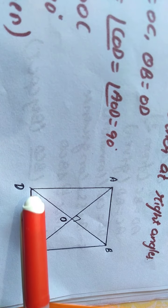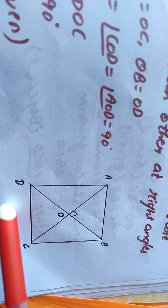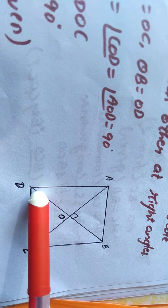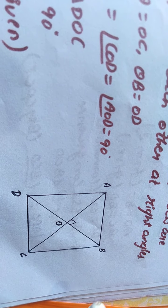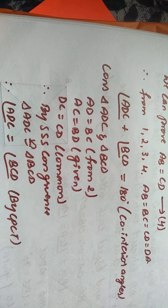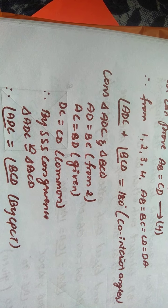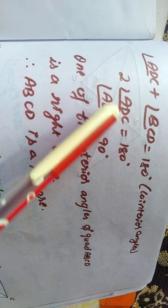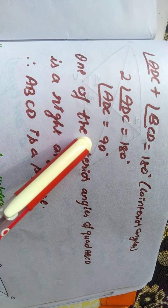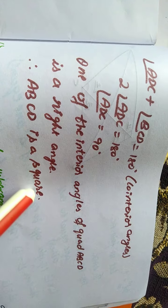By CPCT, angle ADC equals angle BCD. Now I am going to add angle ADC plus angle BCD — both are co-interior angles, so when added they give 180 degrees. Since both angles are equal, 2 times angle ADC equals 180 degrees. Dividing both sides by 2, angle ADC equals 90 degrees. One of the interior angles of the quadrilateral is a right angle, hence ABCD is a square.